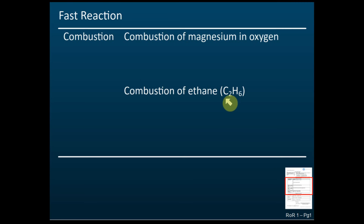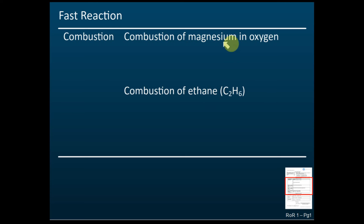You haven't learned ethane yet because ethane is a carbon compound that you're going to learn in chapter 2 of Form 5. So for the time being, if you don't know what ethane is, don't worry about it — we'll discuss that later. Just know that combustion of anything, whether magnesium or ethane, is a fast reaction.